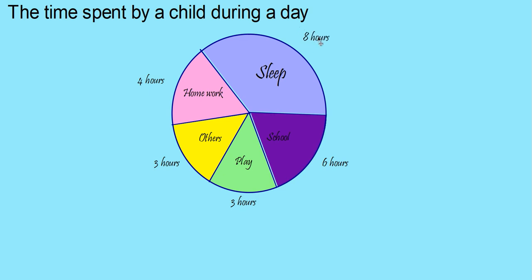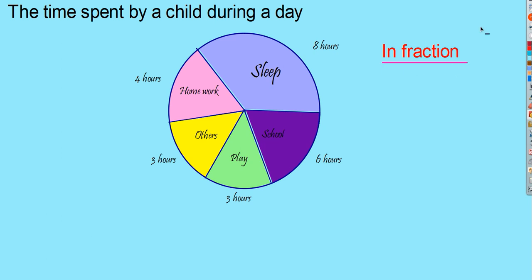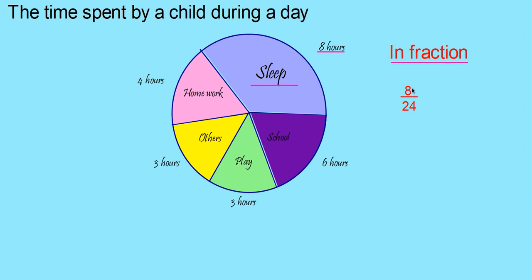Here you can see the child sleeps 8 hours. Can you say what fraction of time he used for sleep? We can express that information as a fraction. The total is 24 hours, and 8 hours are used for sleep, so it can be represented as 8 by 24. Simplifying, 1 by 3rd part of the whole represents sleep.